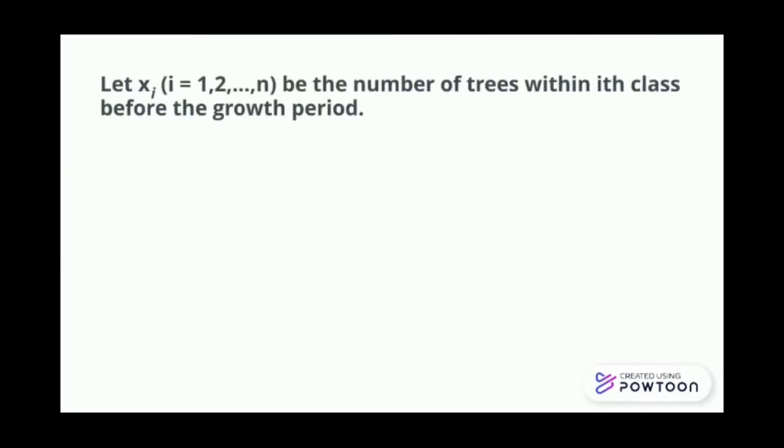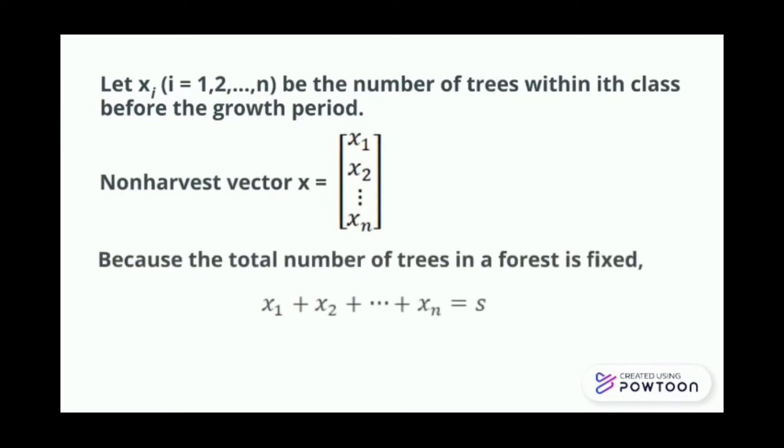Let xi, i equals to 1, 2 until n, be the number of trees within i class before the growth period. Non-harvest vector, x equals to x1, x2, until xn. Because the total number of trees in a forest is fixed, x1 plus x2, until xn, equals to s, we label this as equation 1.